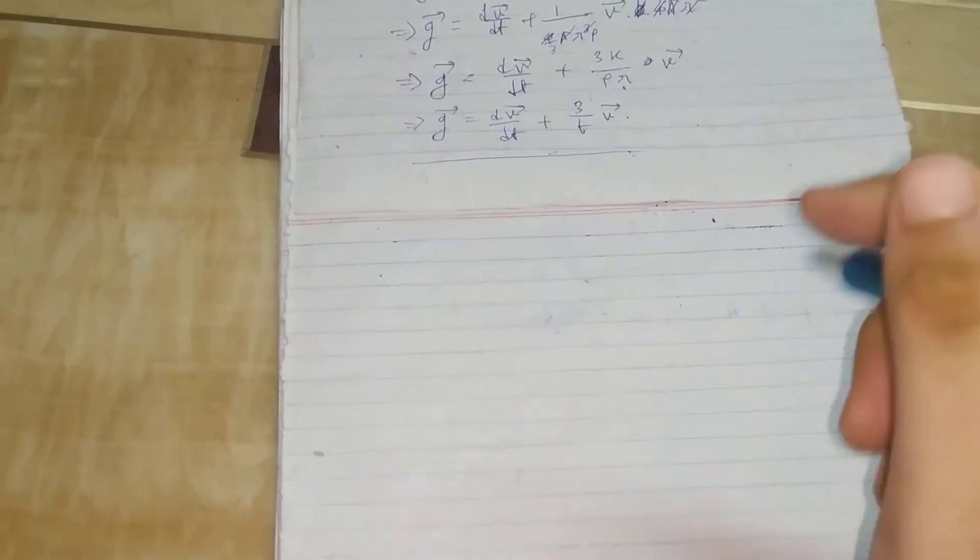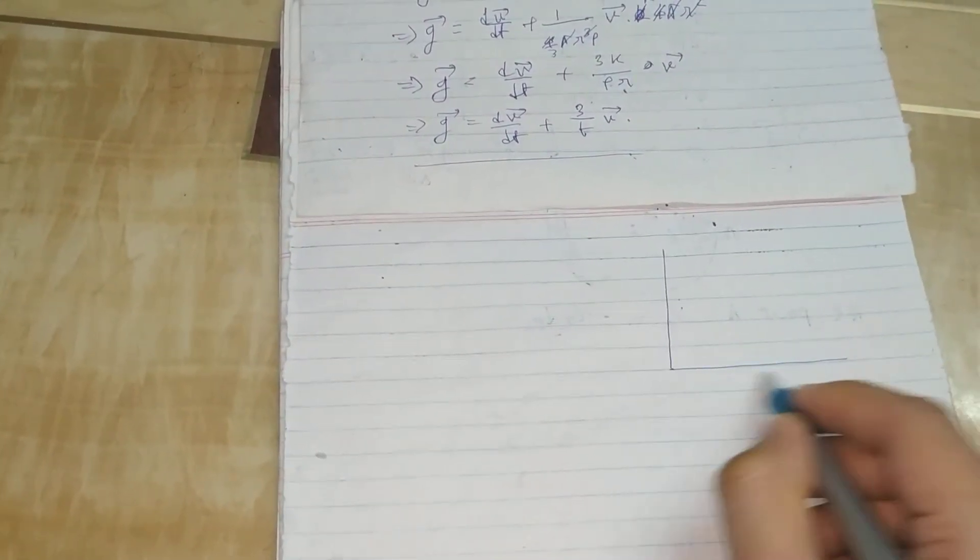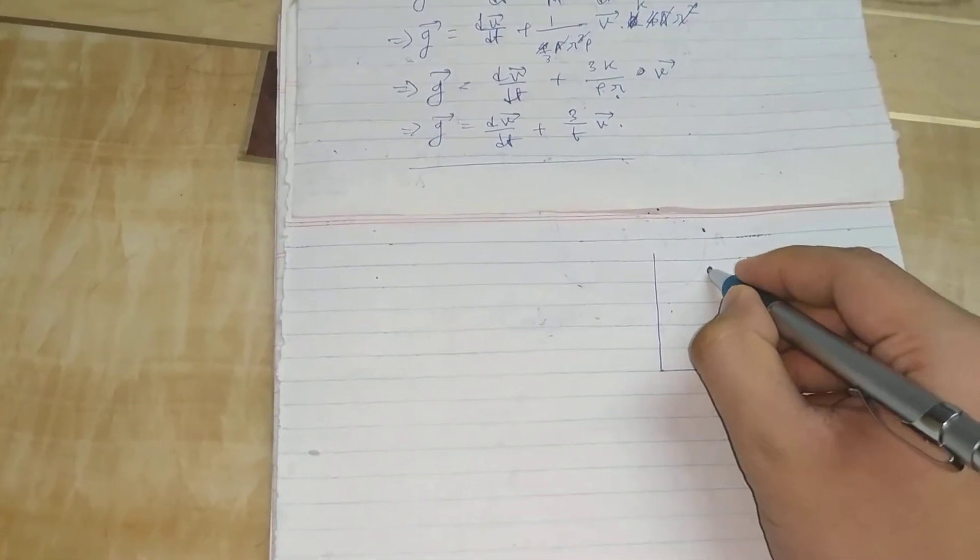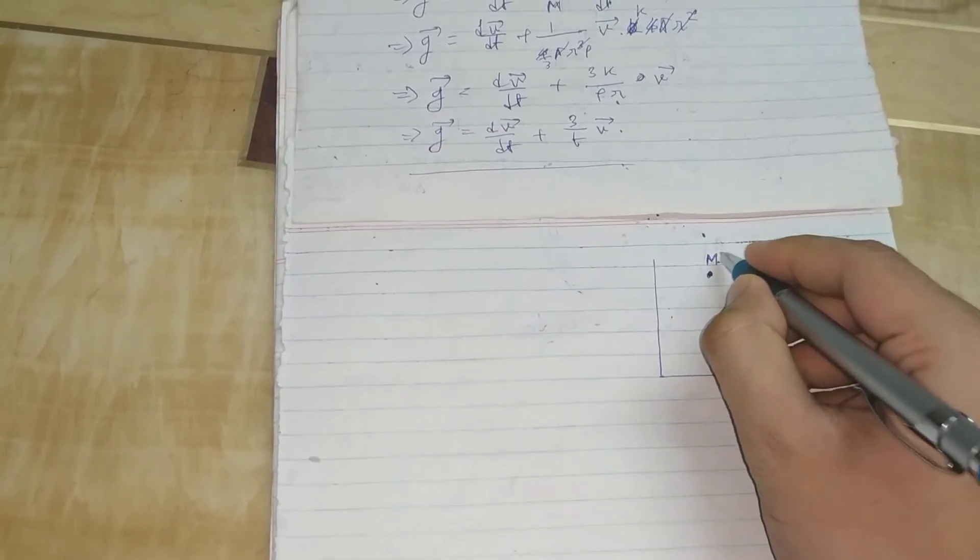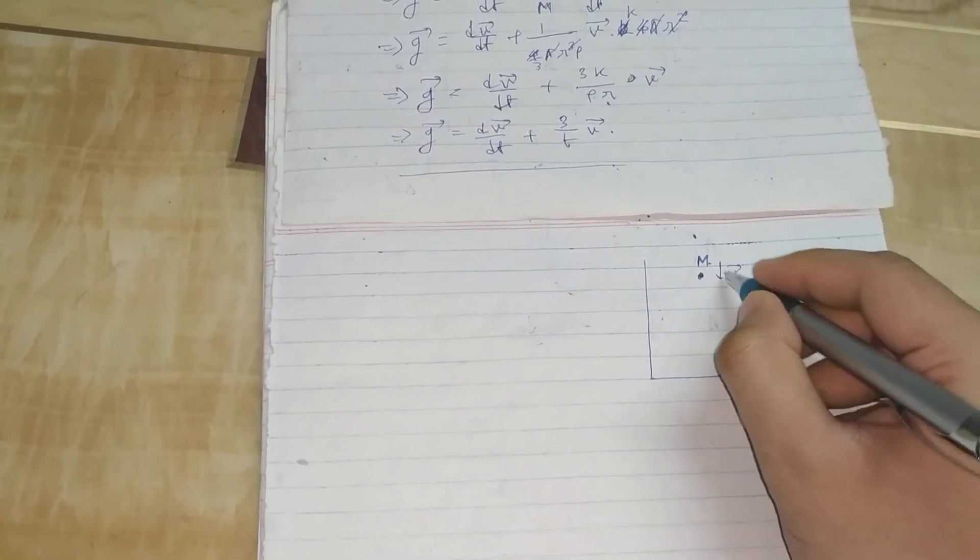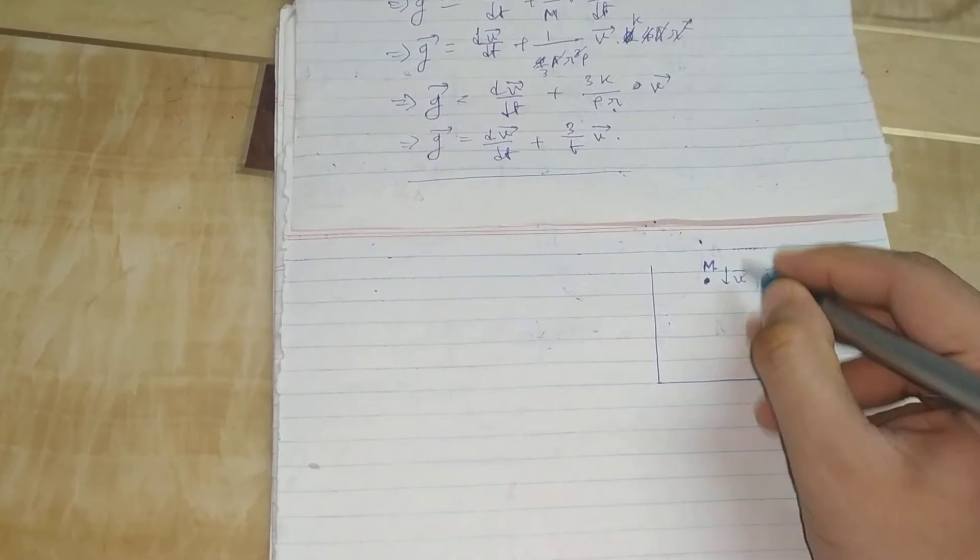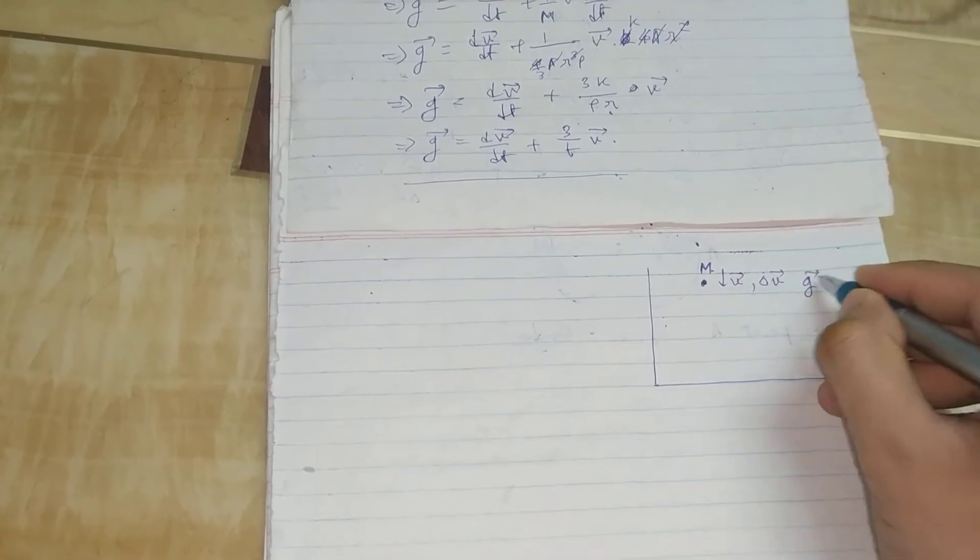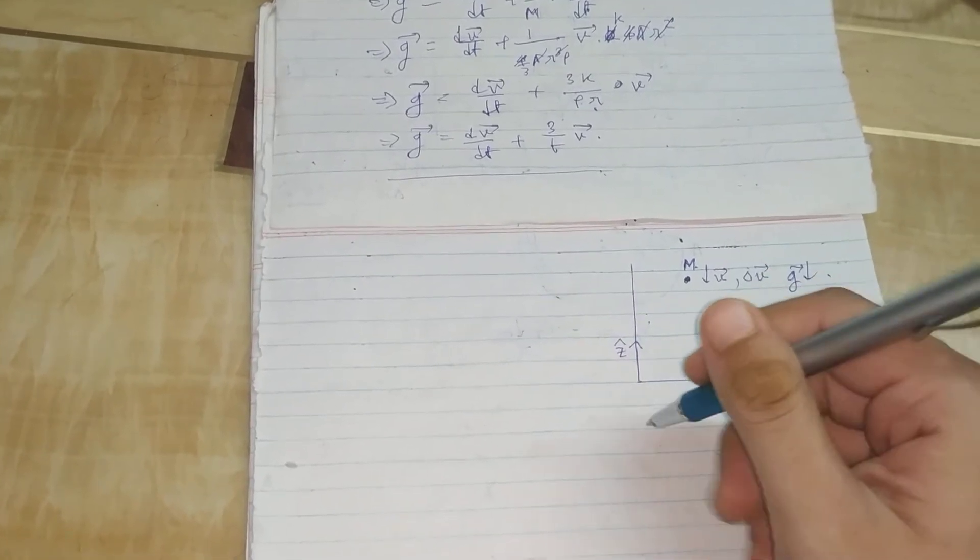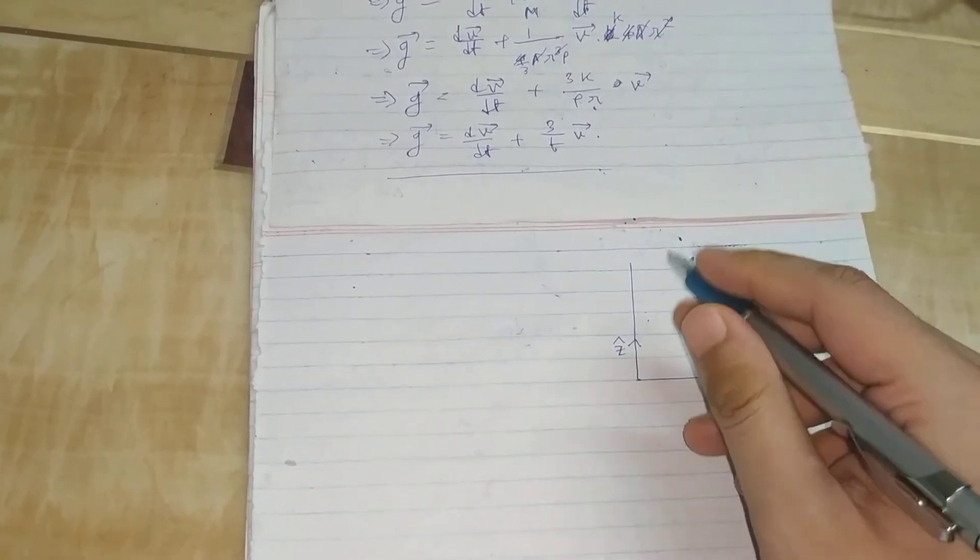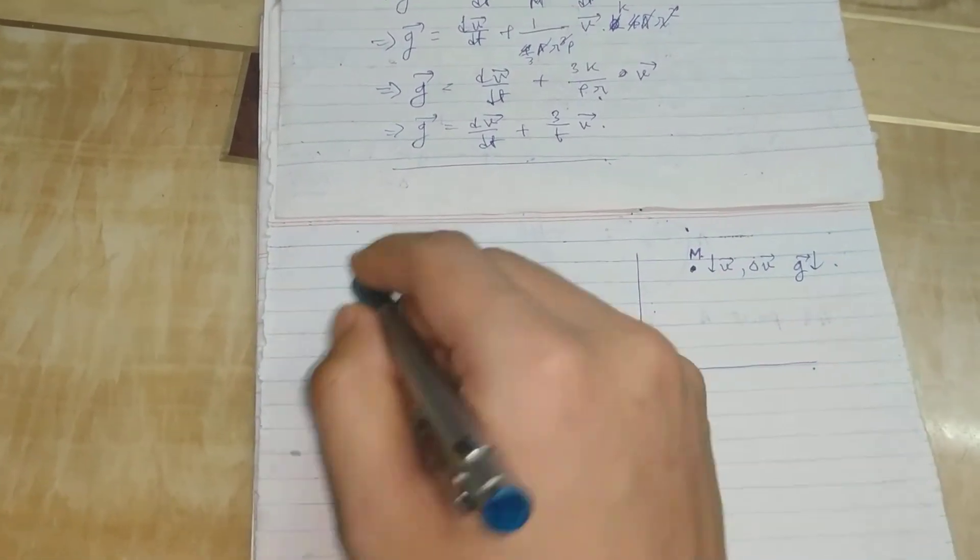Now let us imagine the scenario a bit. If this is the ground, this is the raindrop of mass m with velocity v downwards. The instantaneous velocity is downwards and acceleration due to gravity is also downwards.